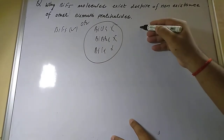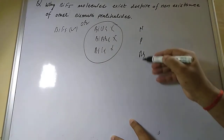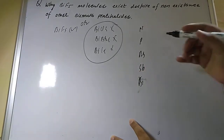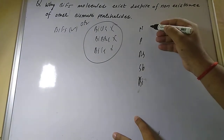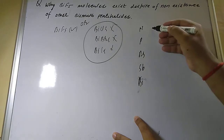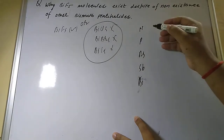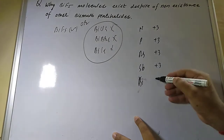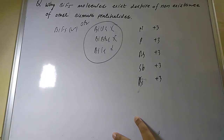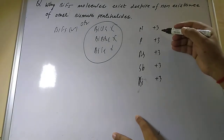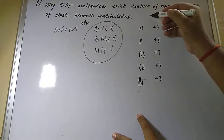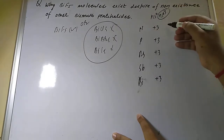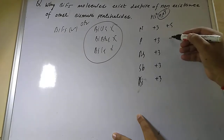Let's understand the concept from the beginning. In Group 15, we have nitrogen, phosphorus, arsenic, antimony, and bismuth. If you talk about oxidation states, they represent many types. The configuration is ns² np³, so if three electrons are replaced it gives +3 oxidation state, and if five electrons are replaced it gives +5 oxidation state.